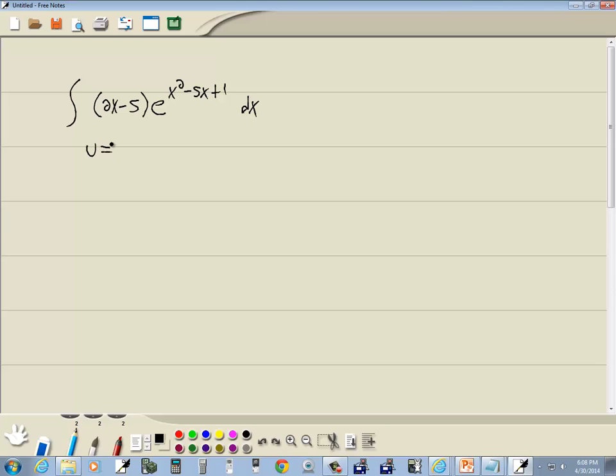Things to try for you. If you've got parentheses to a power, you let u equal to what's inside the parentheses. If you've got a radical, you let u equal to what's inside the radical. And if you have e to a power, which is what we have here, you let u equal to the power.